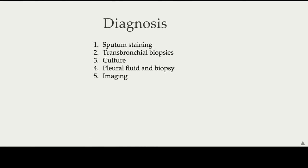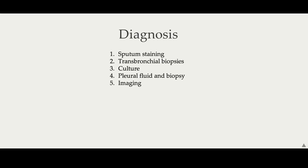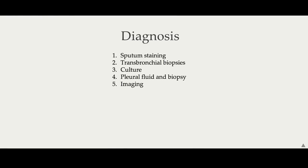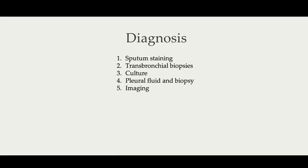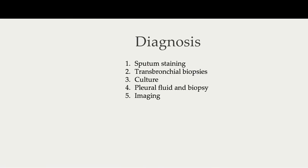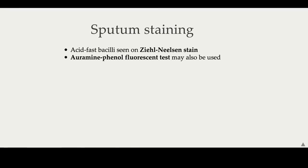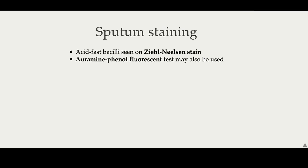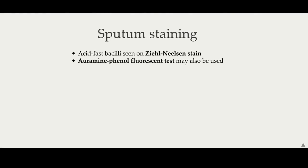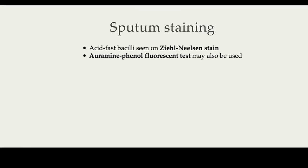Let's move on to talk about diagnosis. Diagnosis in TB can be quite tricky, but there are five important modalities to be aware of: sputum staining, transbronchial biopsies, culture, pleural fluid and biopsies, and finally imaging. Starting with sputum staining, the classical findings are acid-fast bacilli seen on a Ziehl-Neelsen stain. However, sputum can also be stained using auramine phenol fluorescent tests.